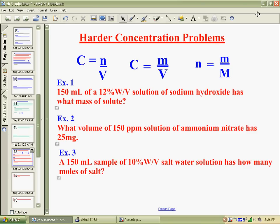So here we've got three different examples. And in those examples, you see concentrations. In example one, there's a concentration given in percent weight to volume. In example two, there's a concentration given in parts per million. And in three, again, we're in weight to volume.